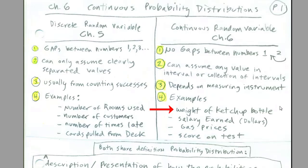Examples: weight of ketchup bottle, salary earned. Now remember, dollars seem like discrete, but they're really not because we could chop it up into partial pennies as fine as we would like. Gas prices, scores on test.